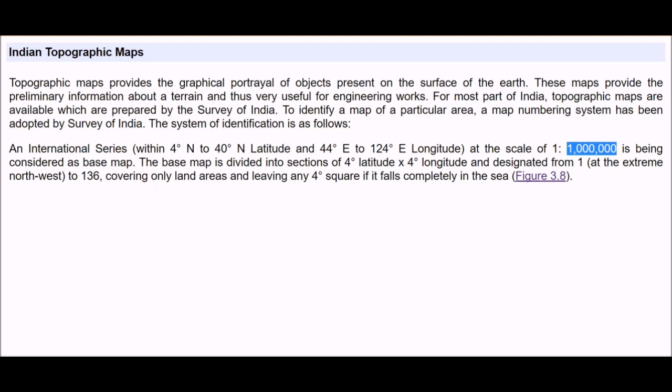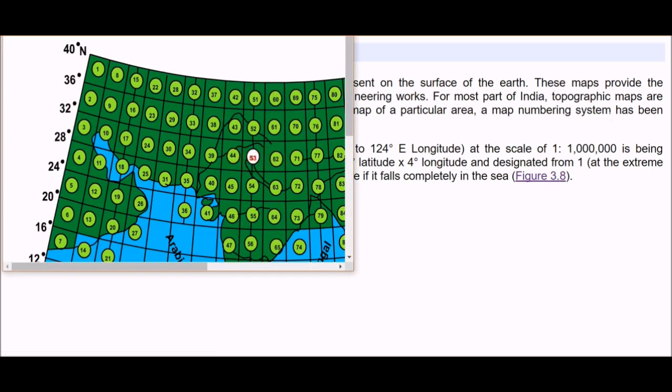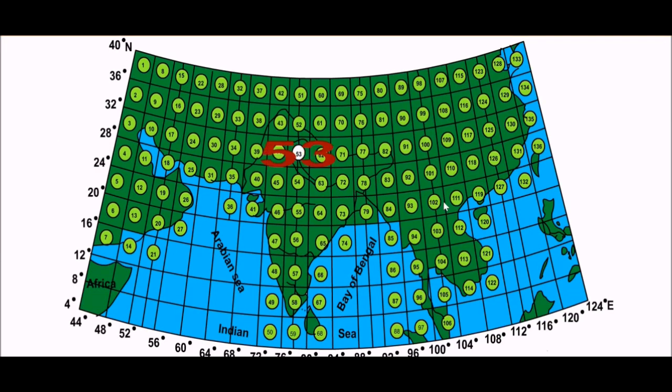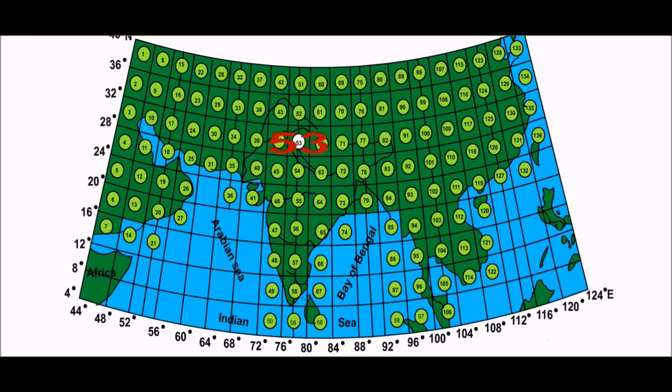This is being considered as a base map. The base map is divided into sections 4 degree by 4 degree longitude by latitude and designated from 1 at the extreme northwest to 136, covering only land areas and leaving any 4 degree square if it falls in the sea. If you can see this is 40 degree, 44 degree.